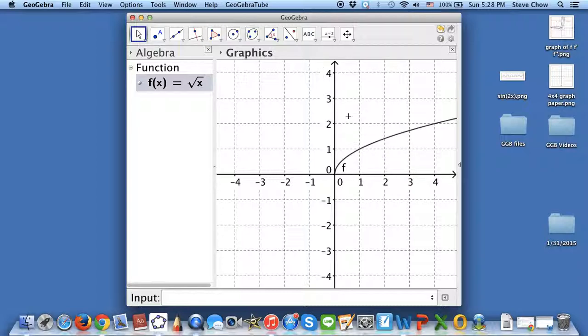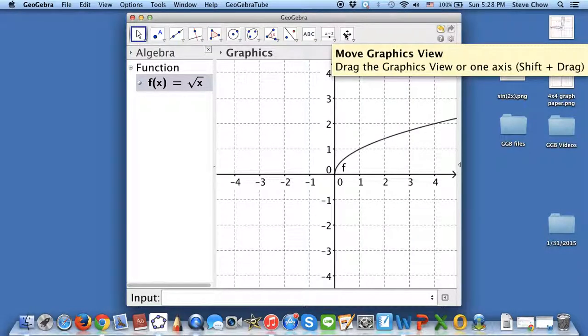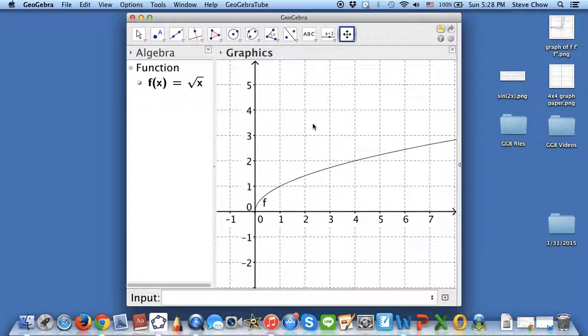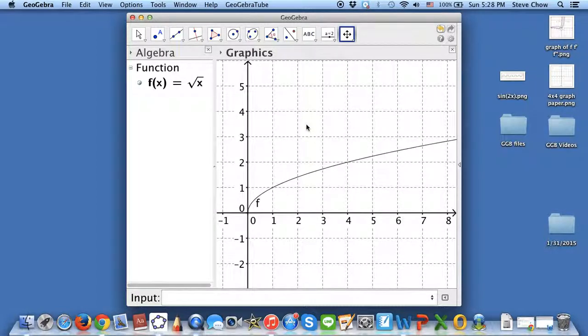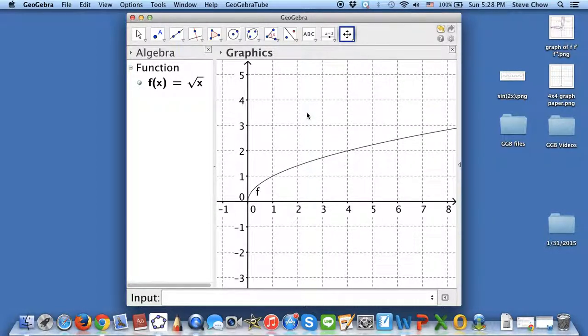But then when we're looking for square root of x, we are mainly looking for the right-hand side, right? Because there's nothing here. So let's click on the move button, and let me just drag it to, let's say, right here. And that looks pretty good.